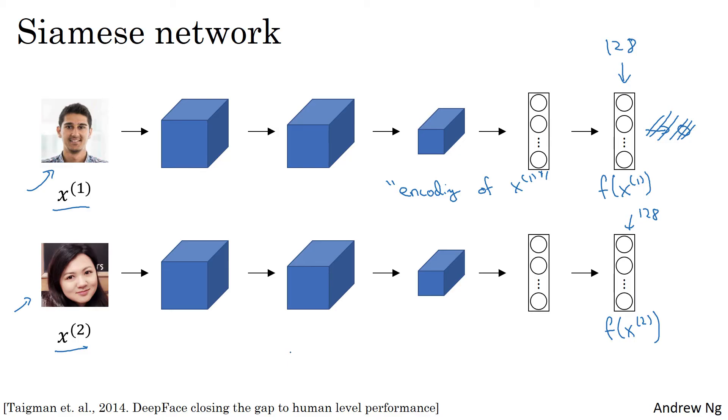Finally, if you believe that these encodings are a good representation of these two images, what you can do is then define the distance between x1 and x2 as the norm of the difference between the encodings of these two images.